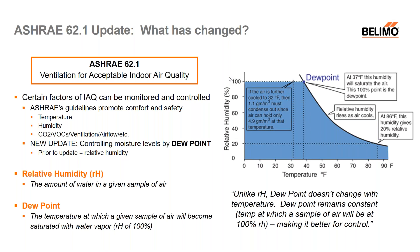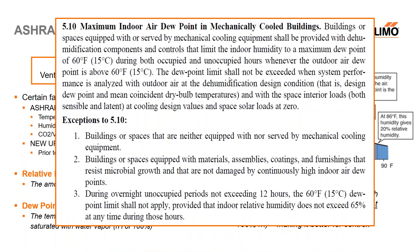There's been a recent and significant change to this section. ASHRAE now recommends controlling moisture based on dew point levels, whereas prior to the update, ASHRAE recommended controlling moisture levels based on relative humidity set points. Here's a direct snip pulled from the 62.1 standard explaining that buildings should now limit indoor humidity levels to a maximum dew point of 60 degrees Fahrenheit. Of course there are exceptions to the guidelines, especially when it comes to uncooled spaces and unoccupied periods, but generally speaking, the new recommendation is to limit the max dew point within your facility to 60 degrees.